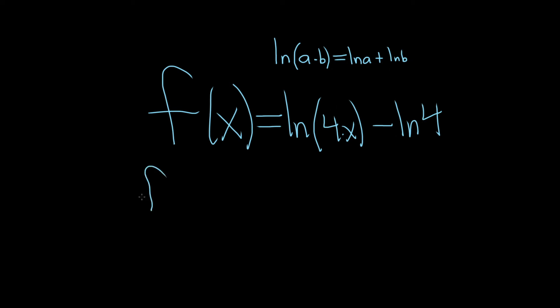So we can write this as f(x) equals the natural log of the first one, so ln of 4, and it's times, so it turns into plus, and then the natural log of the second one, so x, and then minus the natural log of 4.